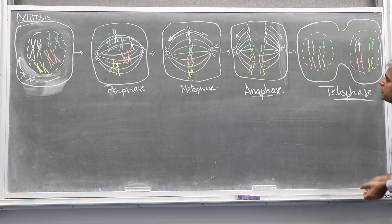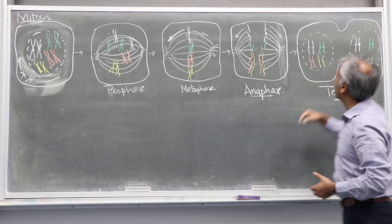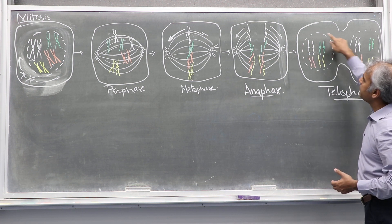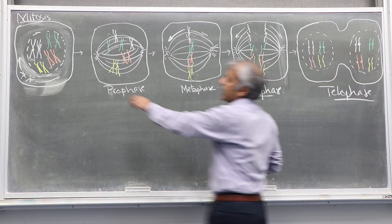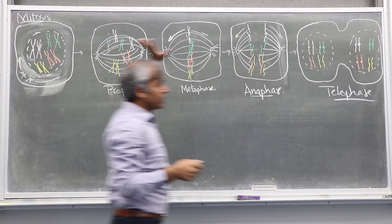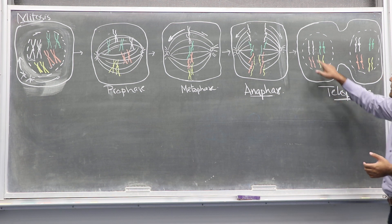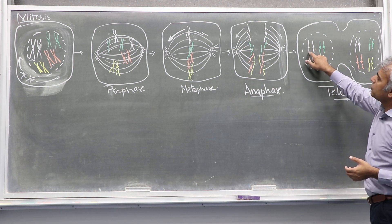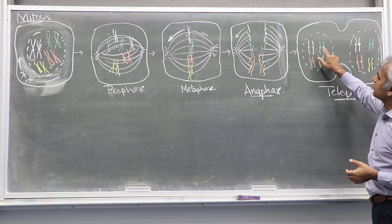Eventually, when chromosomes arrive at the opposite poles, we start seeing the nuclear membrane coming back. You can see — just like the mother cell which had four pairs of chromosomes — here you can now see four pairs of chromosomes.